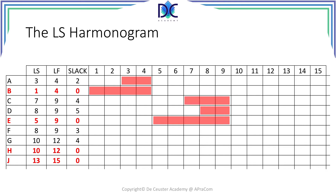Activity F runs from period 8 to 9. The next activity is activity G, which starts on period 10 and finishes on period 12. Task H starts on period 10 and finishes on period 12. Finally, activity J starts on period 13 and finishes on period 15.